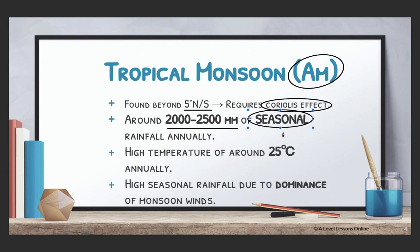For example, during the southwest monsoon in June and July, areas like Bangladesh or India experience extremely high seasonal rainfall during June, July, and August. However, in West Africa during the northeast monsoon it may be dry, or in the case of India it may be dry during the northeast monsoon because of the Himalayas. You really have to look at it from a seasonal point of view. The AM climate also has high temperatures of around 25 degrees Celsius, since tropical monsoon climates are found closer to ITCZ, meaning maximum insolation.